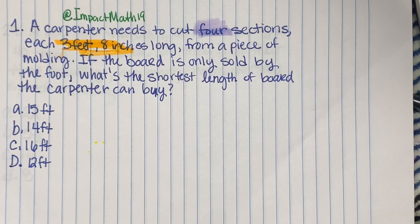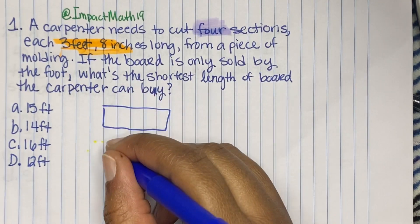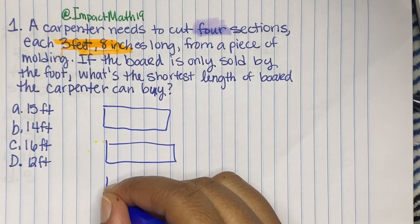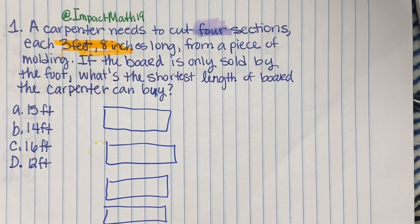So, for my visual learners, draw out those four sections. One, two, three, four. We're going to draw out four pieces.